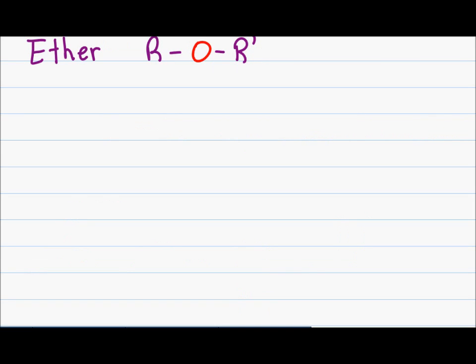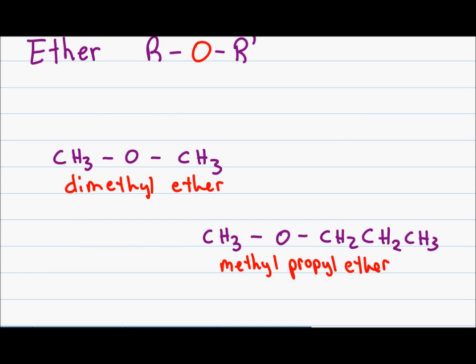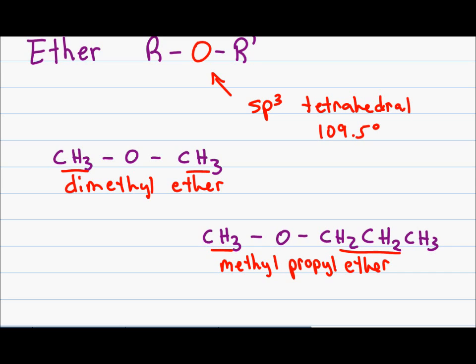An ether is classified as having an oxygen between two R groups. The R groups in an ether can be the same, like this dimethyl ether example, or they can be different, as in this methylpropyl ether example. As with alcohol, ether only has single bonds, which means an ether is sp3 hybridized, tetrahedral in shape, with a bond angle of 109.5 degrees.